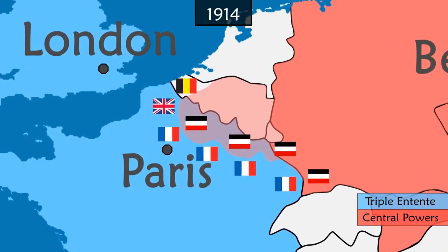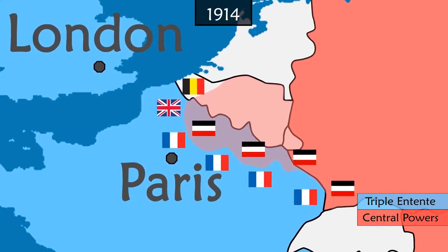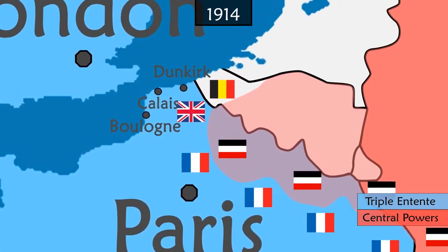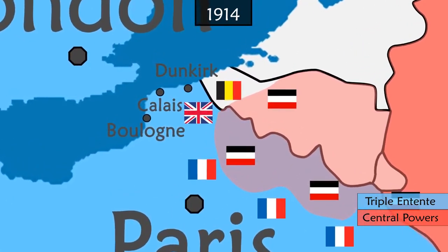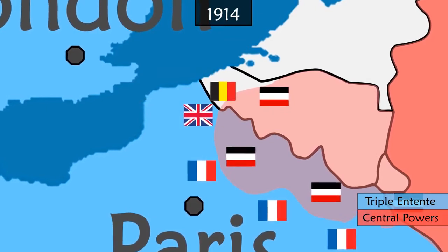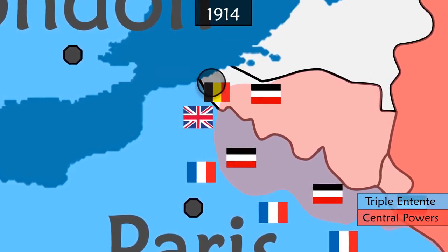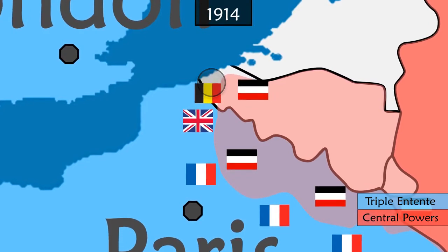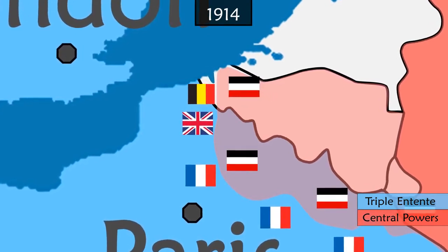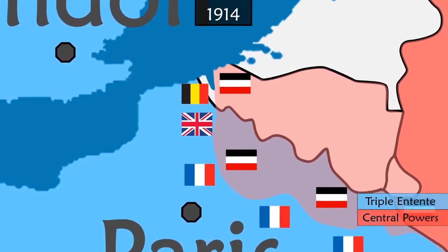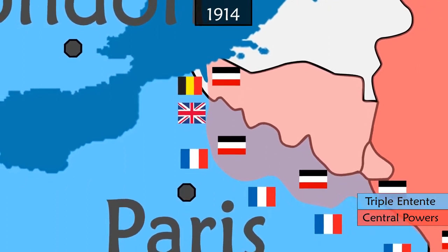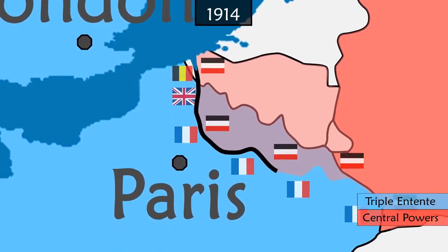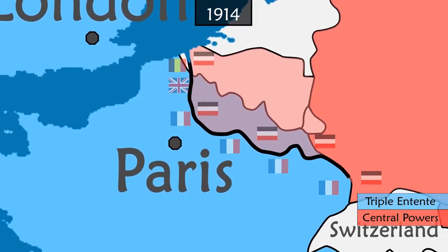The new German objective is to take over the strategic ports of Calais, Dunkirk and Boulogne to cut British supplies. The inferior Belgian army cannot resist the German advance. In the plain of Isser, the choice is made to open lock gates to flood the polders. With the German army stopped in their tracks, the front line is etched out with the construction of 700 kilometres of trenches stretching from the North Sea to Switzerland.